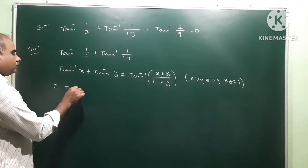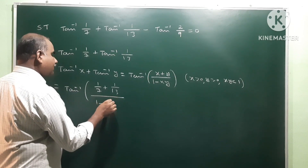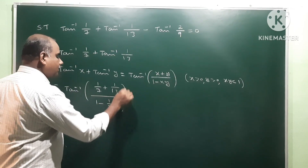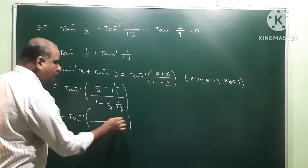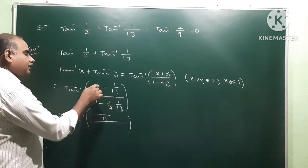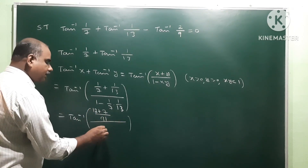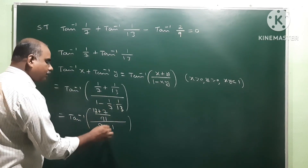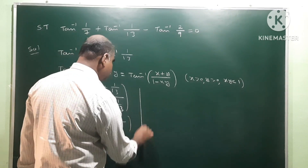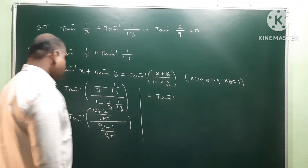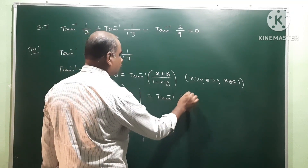So apply the formula: tan inverse of x plus y, where x means 1 by 7 and y means 1 by 13, by 1 minus x means 1 by 7 into y means 1 by 13. Now take LCM in the bracket — numerator: 13 into 1 is 13, 7 into 1 is 7, denominator: 7 into 13 is 91. So 91 into 1 minus 1 into 1 gives 91 minus 1 equals 90. The 91s cancel, giving tan inverse of 20 by 90.